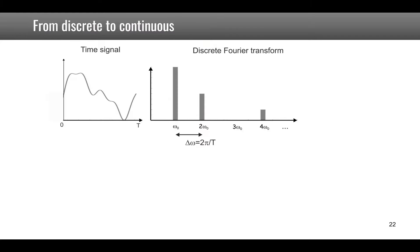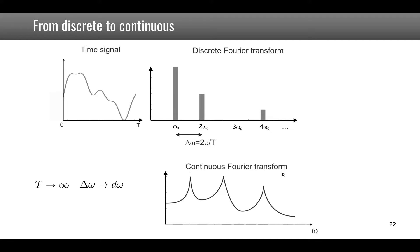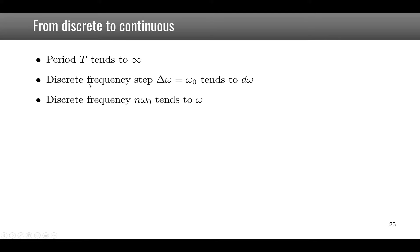The discrete Fourier transform applies to periodic signals, but if the signal is random with no periodicity, one must use the continuous Fourier transform. For a discrete Fourier transform, there is one component at each multiple of ω₀. If the period T tends to infinity — so the signal is no longer periodic — the frequency step Δω tends to dω, approaching zero, and the function becomes continuous.